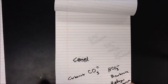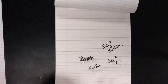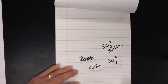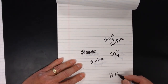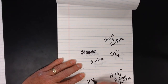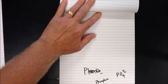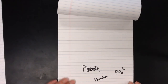The same principle applies to sulfite and sulfate. Adding hydrogen — which is plus one — changes the charge by one. HSO3 minus is hydrogen sulfite or bisulfite, and HSO4 minus is hydrogen sulfate or bisulfate.